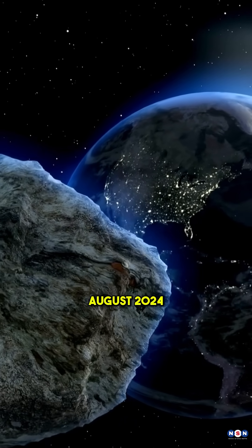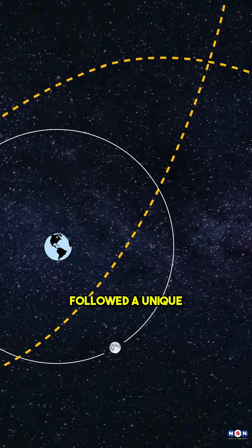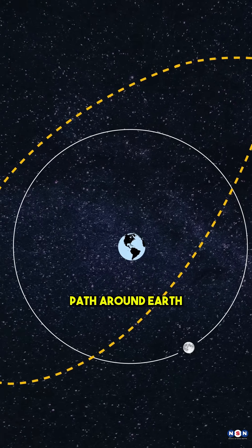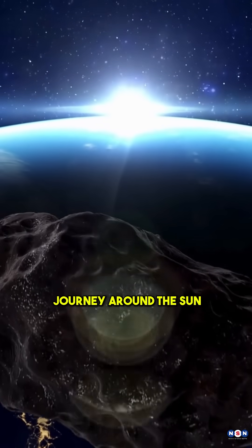Discovered in August 2024, this mini-moon followed a unique horseshoe-shaped path around Earth before continuing its journey around the sun.